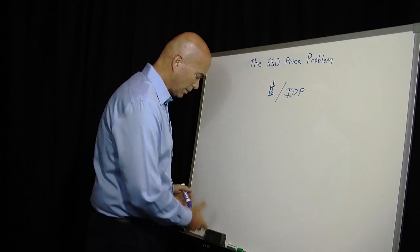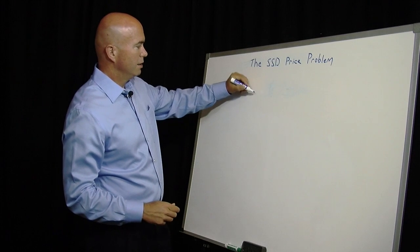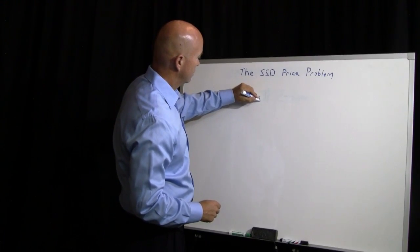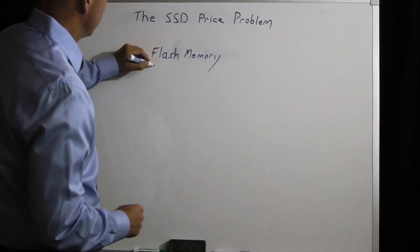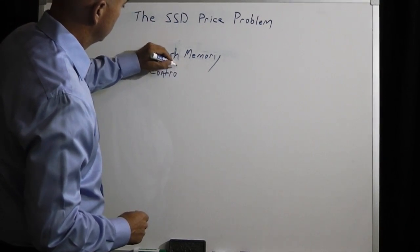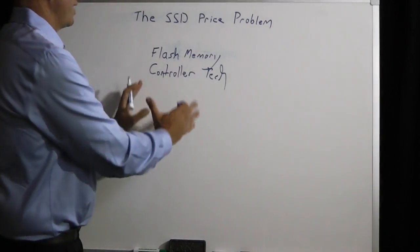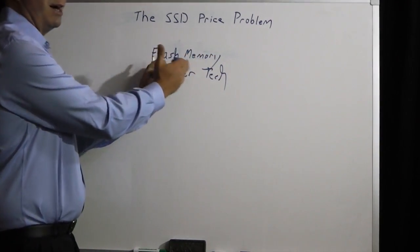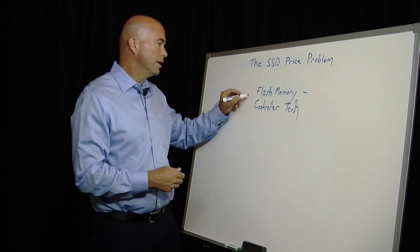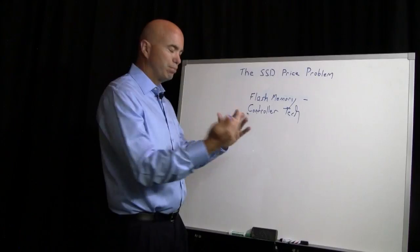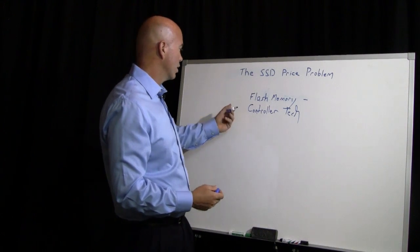First, a solid state system isn't just a bunch of memory. There is a flash memory component. There is some controller technology. The controller technology is what controls how data is written to the flash memory. The flash memory, of course, is the actual storage itself. And then the next step is to put this into some sort of a system that can be shared or used in a network scenario.